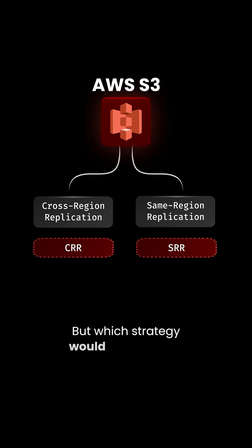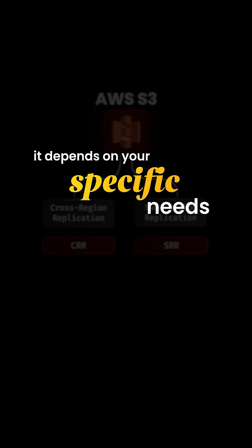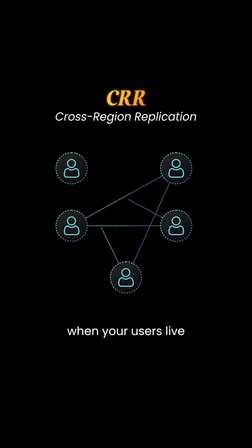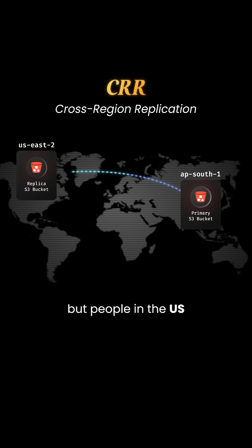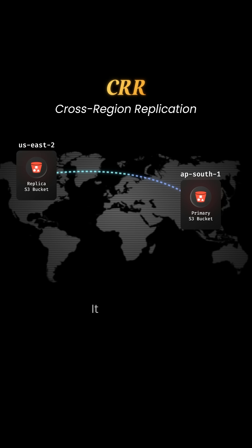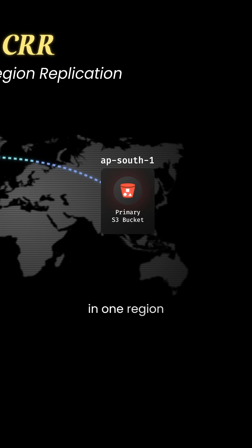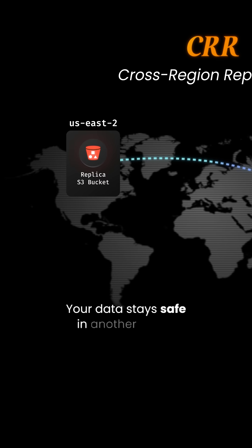But which strategy would you choose? It depends on your specific needs. CRR is great when your users live far away — for example, if your main bucket is in Singapore but people in the US need to access it faster. It also helps if something bad happens in one region, like a big outage, since your data stays safe in another place.